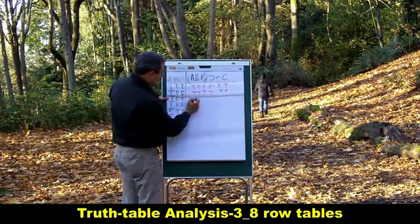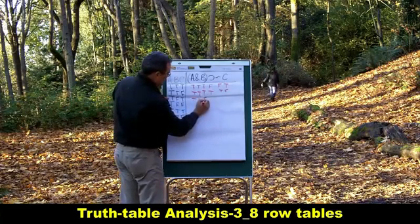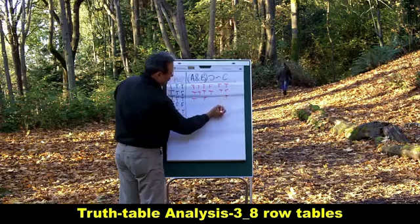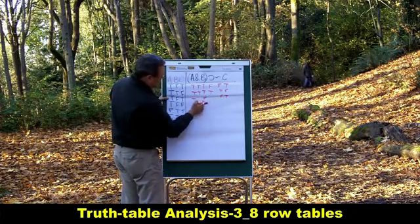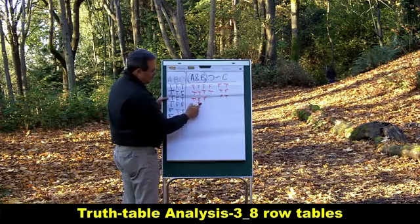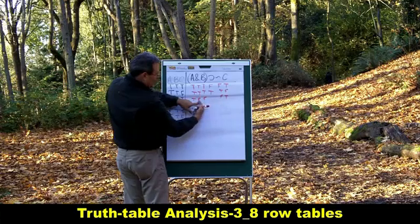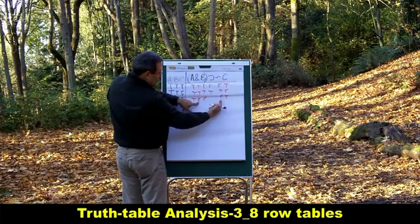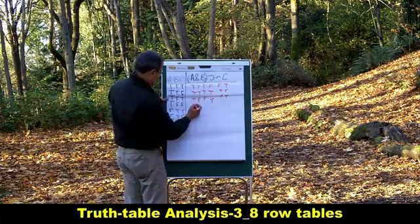Row three, A is true, B is false, and C is true. If C is true, the tilde is false. The ampersand here is gonna be false, because the only way to make an ampersand true is if both sides are true. And now to do the horseshoe, I look at the main operator on the left side, the main operator on the right side, and that's gonna give me a true horseshoe.